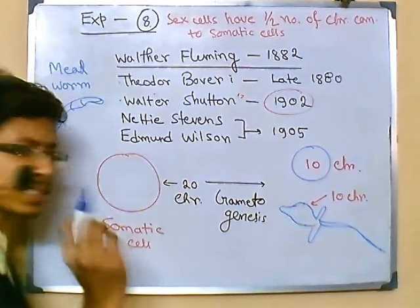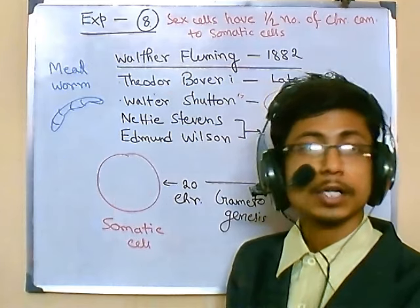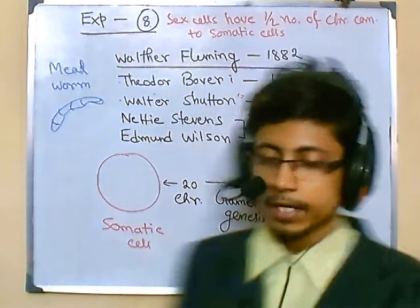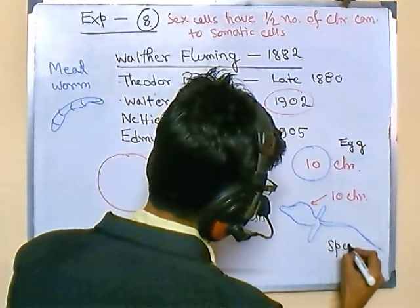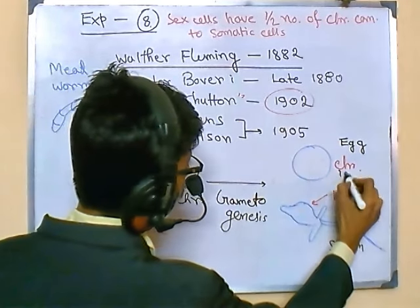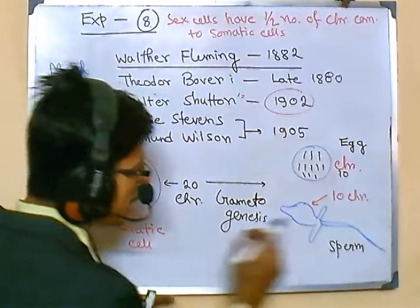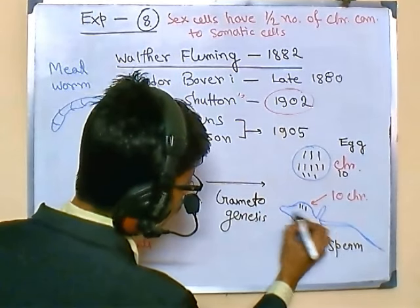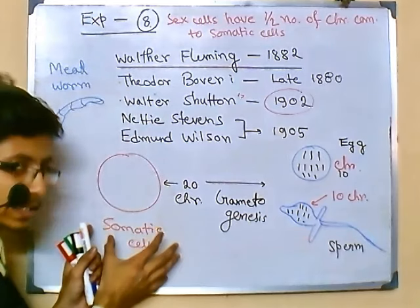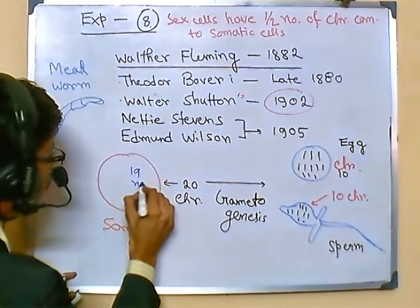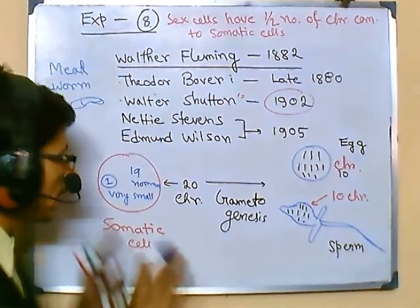What they found in the somatic chromosomes is that among those 20 chromosomes, some chromosomes looked slightly different from others. When looking at the nucleus under a microscope, the lengths and shapes of the chromosomes were not the same. In the somatic cells they found 19 chromosomes of normal shape but one very small, tiny chromosome among the 20.